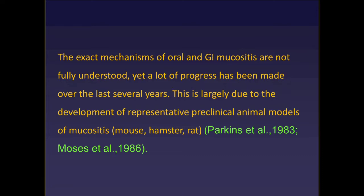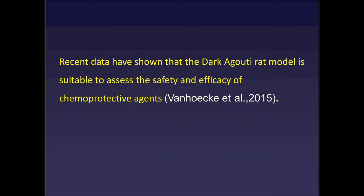The exact mechanism of oral and GIT mucositis is not fully understood, though a lot of progress has been made over the last several years. This is due to the development of representative preclinical animal models of mucositis, such as mouse, hamster, and rat. Recent data have shown that the Dark Agouti rat model is suitable to assess safety and efficacy of chemotherapeutic agents.